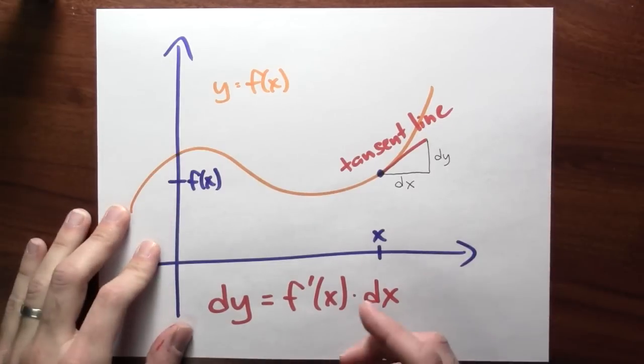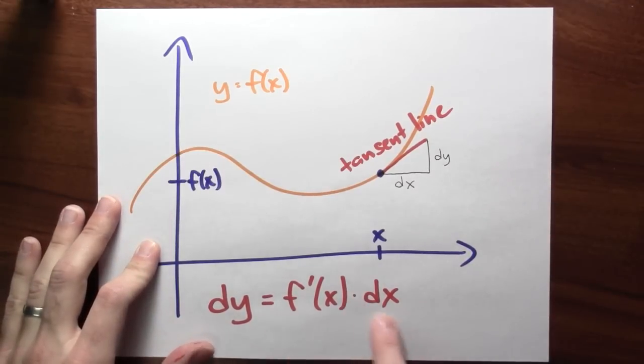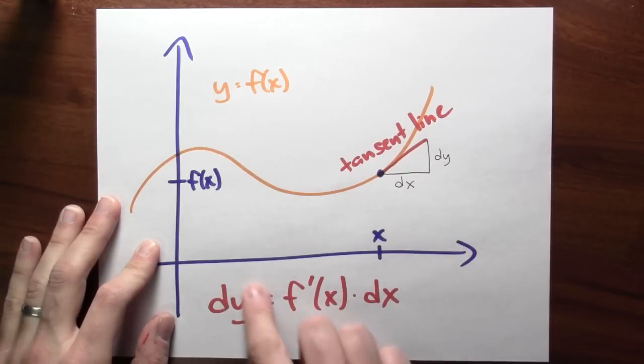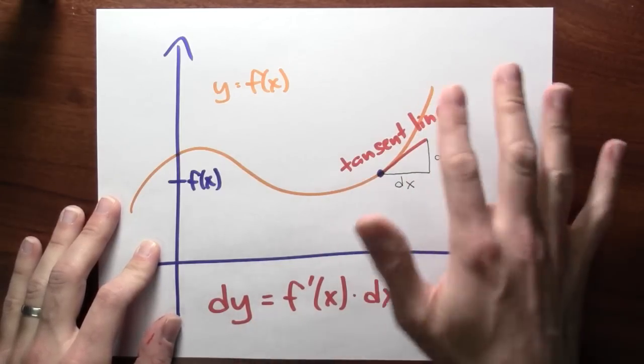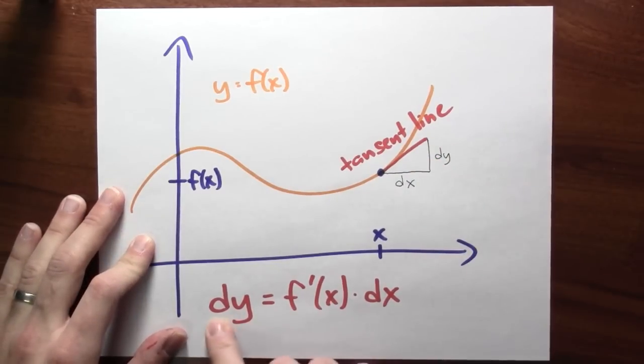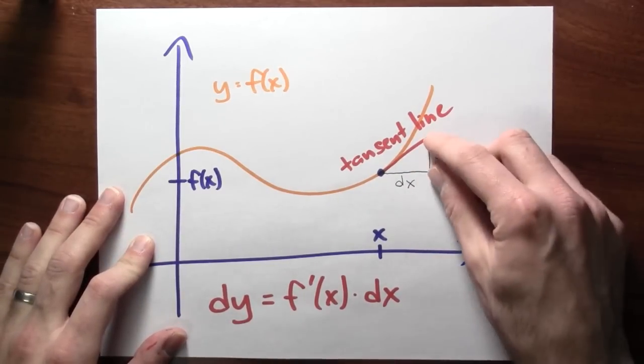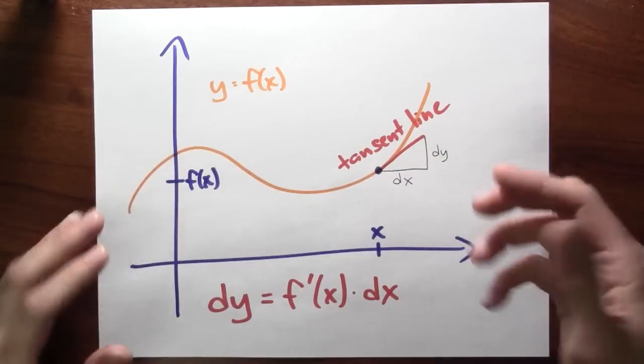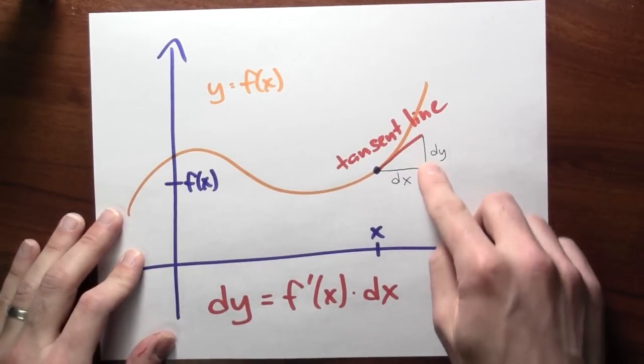If you take the derivative and multiply it by how much the input changed by, you don't actually get how much the output changed by. But you get an approximation to how much the output changed by. And that's what this dy here is being used as. This dy is the change in the linear approximation.